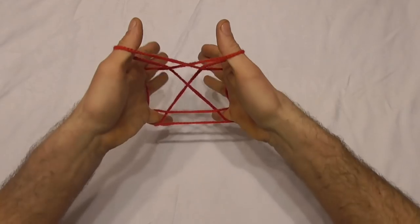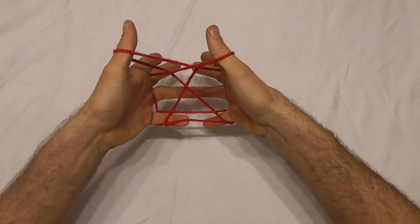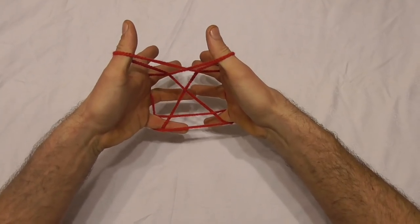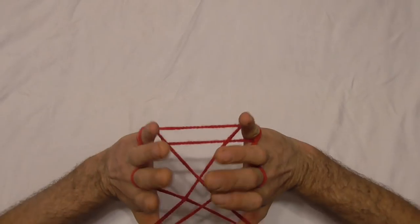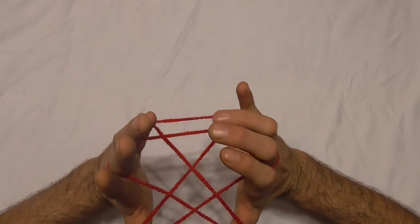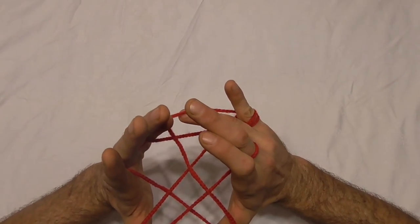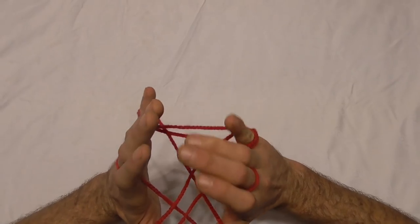And now if I rotate it this way, you should see that there is a straight string at the very back of our little fingers. I want you to pick that up and take it off the little finger.